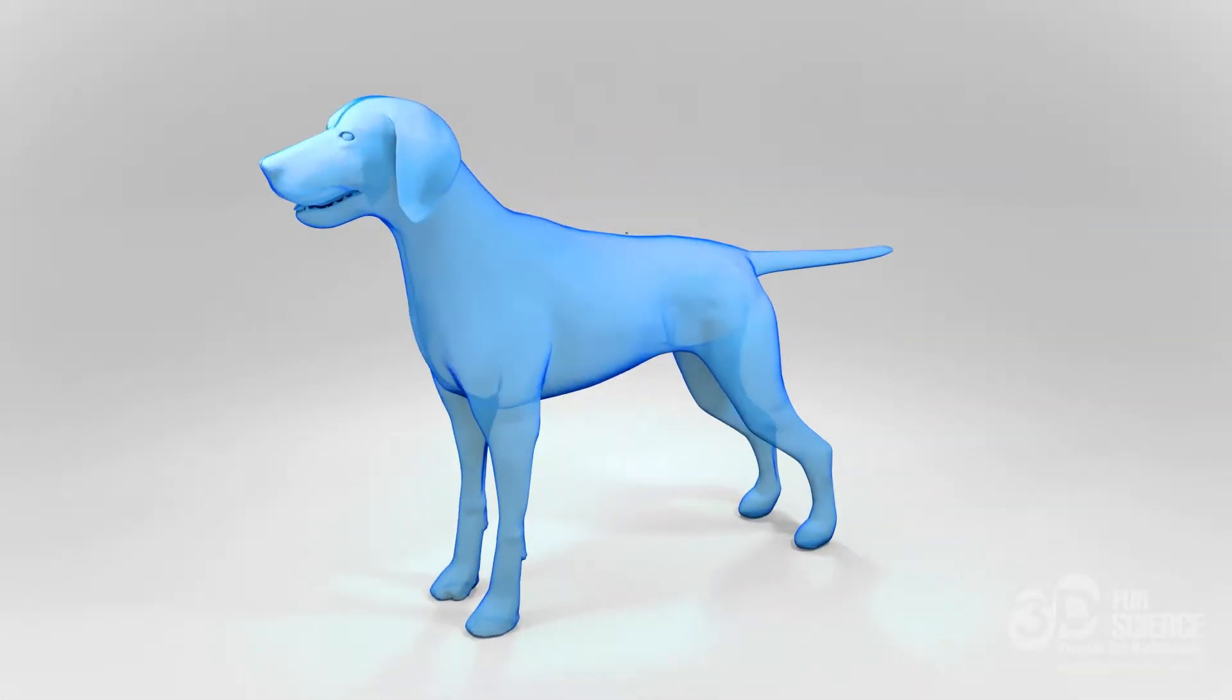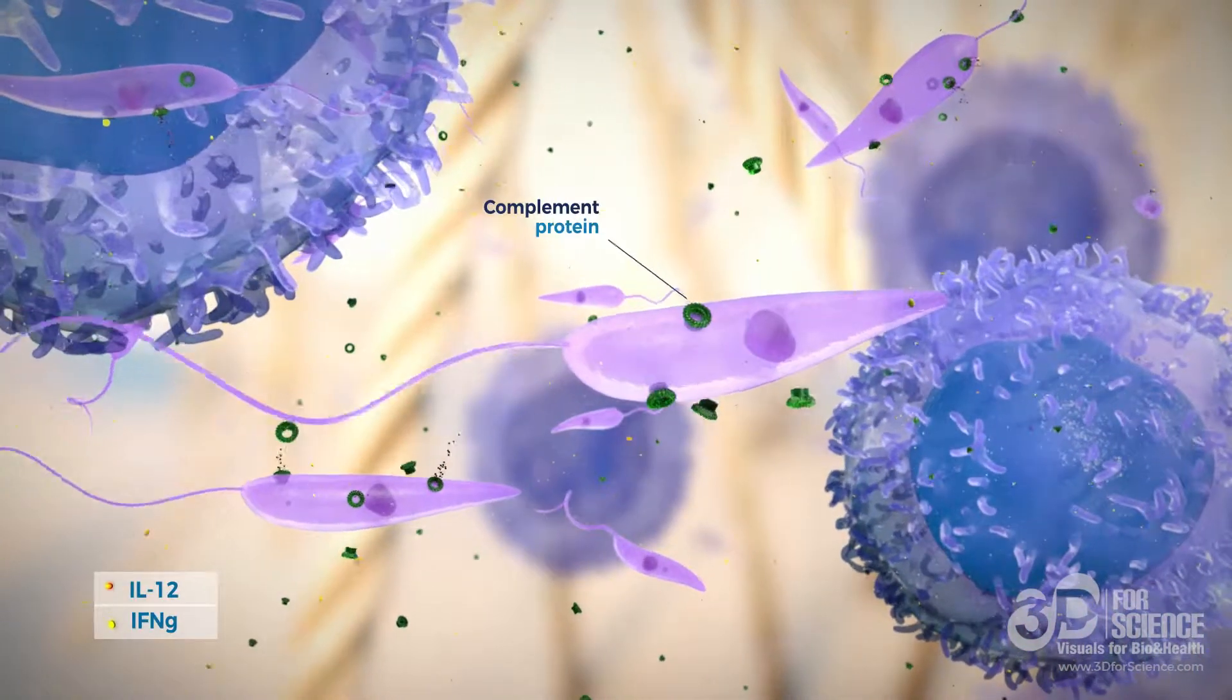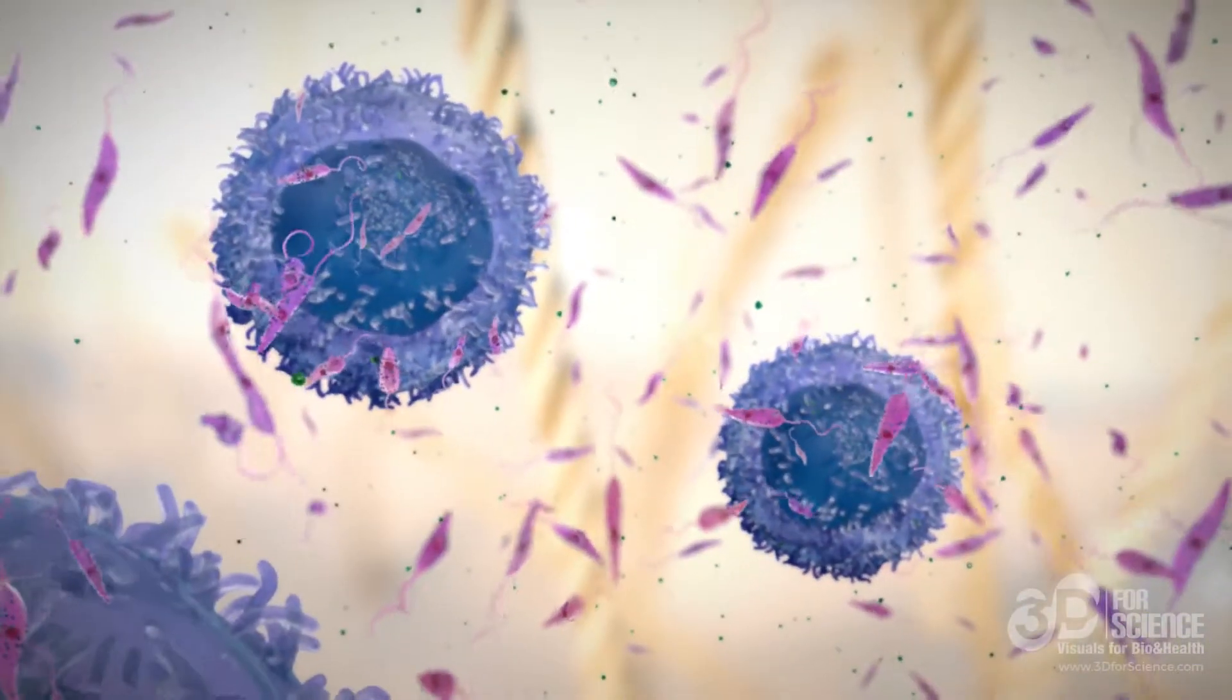The sandfly inoculates the promastigote, activating the animal's innate immune response. Immune cells, together with cytokines and complement proteins, are activated and cause parasite lysis.